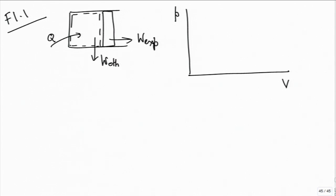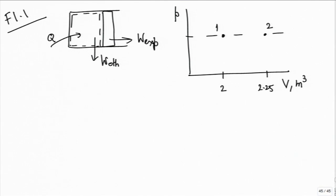We are given that it initially executes a constant pressure process from initial state 1 to final state 2, expanding from 2 cubic meters to 2.25 cubic meters. On the P-V diagram it is a constant pressure quasi-static process. This is process 1, let me call it 1-A-2. The system is brought back to its initial state - the initial state was 1, the final state for the first process was 2.